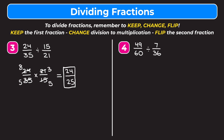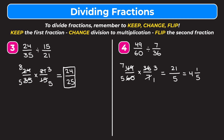Example four is forty-nine sixtieths divided by seven thirty-sixths. Keep forty-nine sixtieths, change division to multiplication, flip to get thirty-six over seven. Cross-reducing: forty-nine and seven both divide by seven — forty-nine becomes seven, seven becomes one. Thirty-six and sixty both divide by twelve — sixty becomes five, thirty-six becomes three. Multiplying: seven times three is twenty-one on top, five times one is five on the bottom. As a mixed number: five goes into twenty-one four times with one left over, giving four and one fifth.